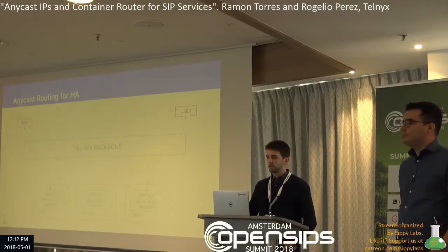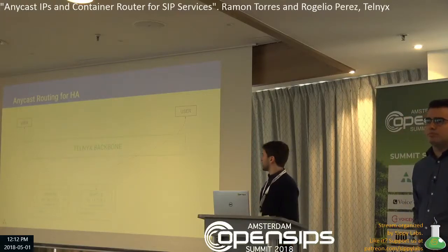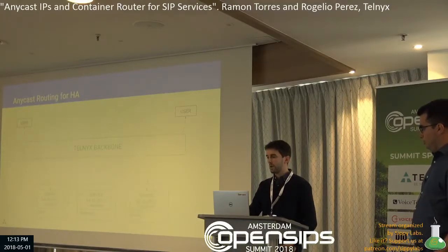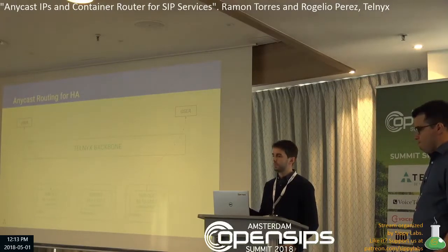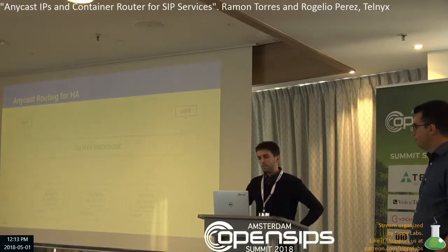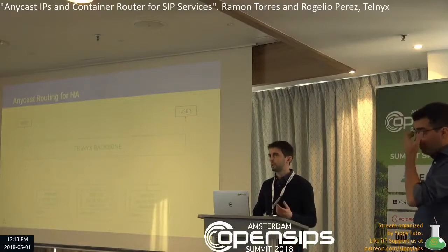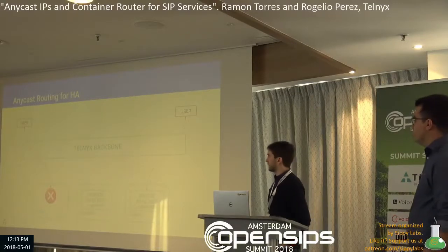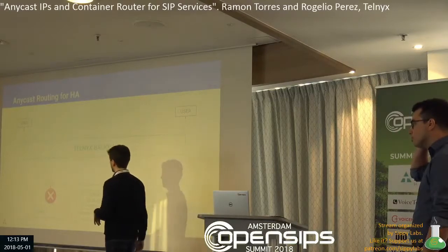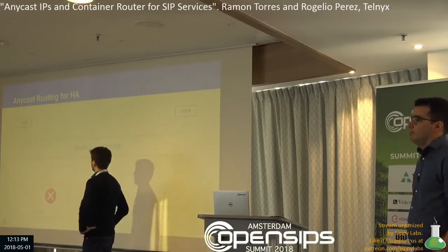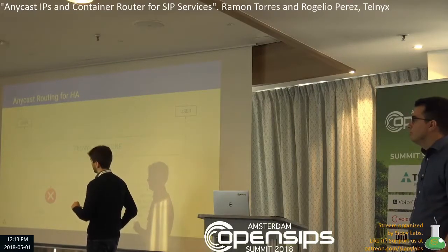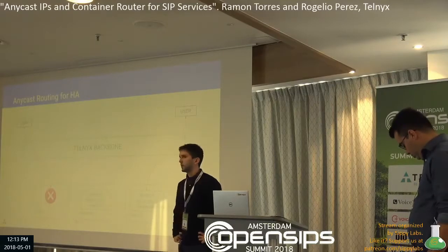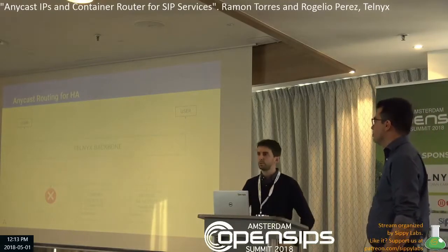We also get resilience to failures because if one of the sites goes down, the traffic will automatically route to the next closest service to the user. If the service comes back up, the routes will be announced to the network and once they propagate, traffic will be rerouted to it. However, this has some issues. In a real scenario, the site in London might be up and announcing routes, but the service is not responding — so calls get routed to London but they don't complete. Customers close to London experience an outage. We fixed this problem with the Container Router solution.